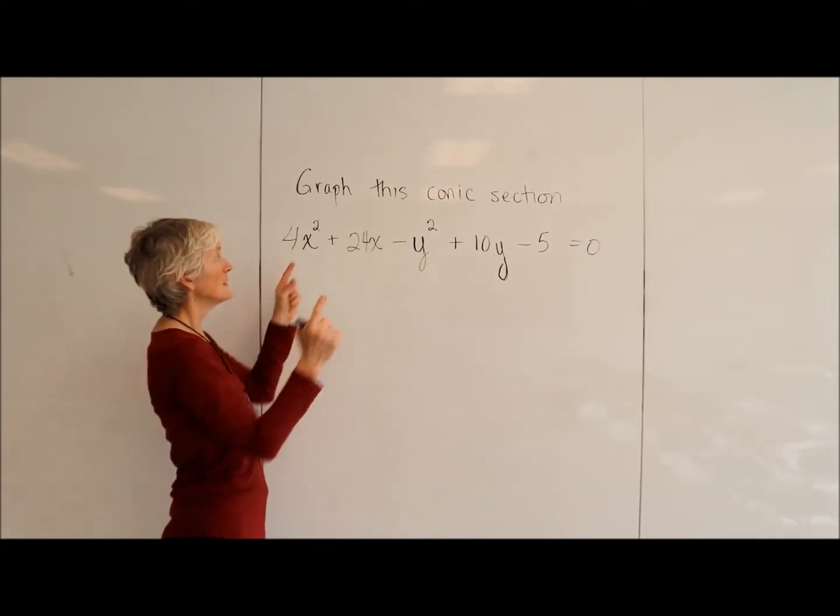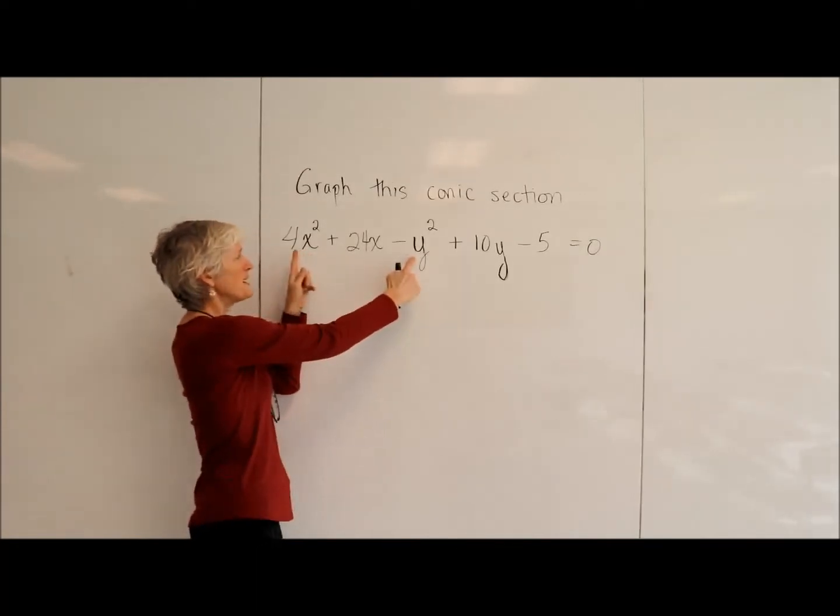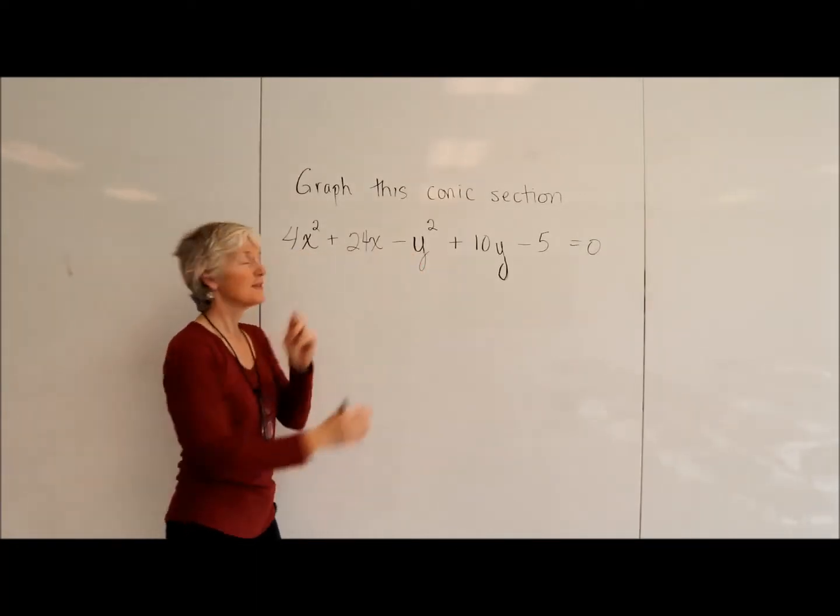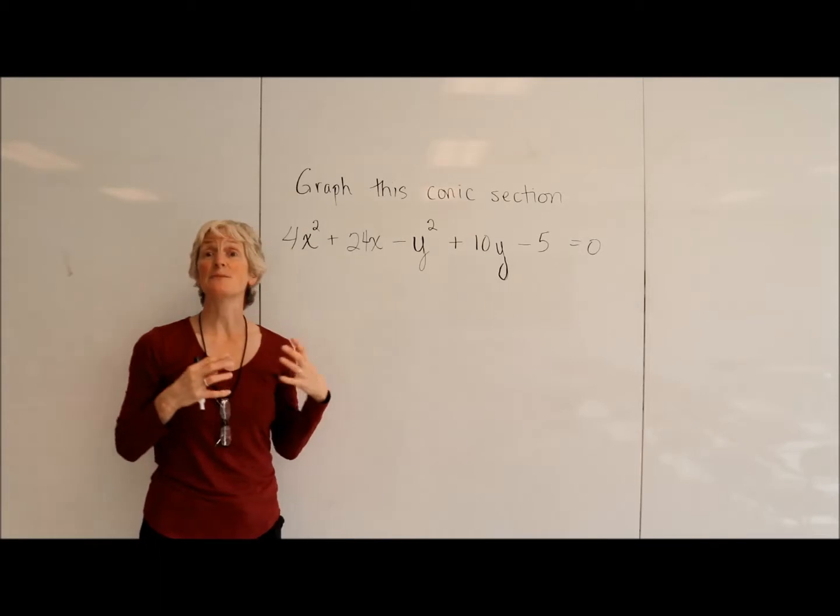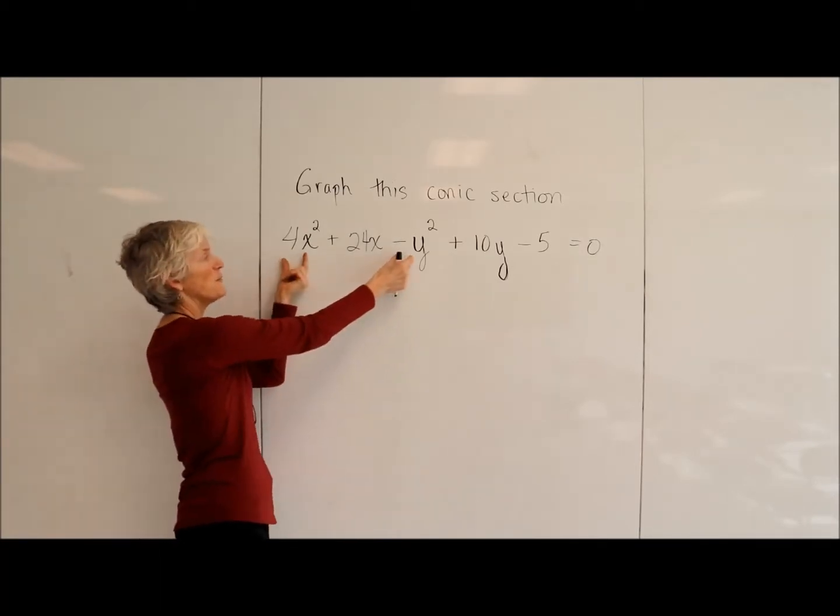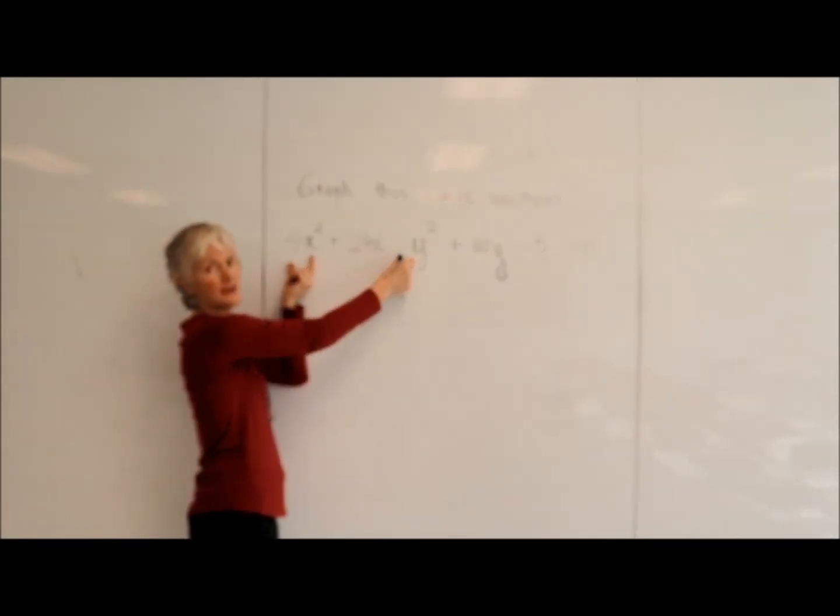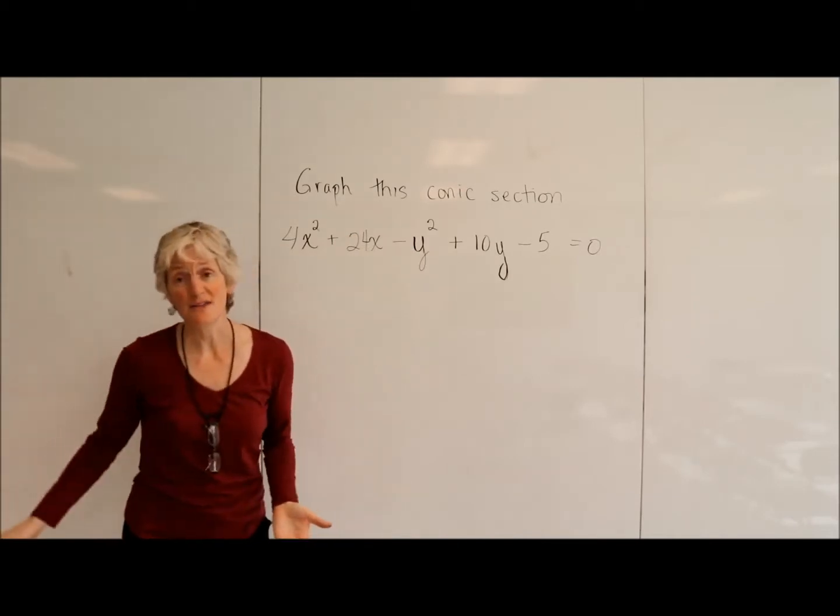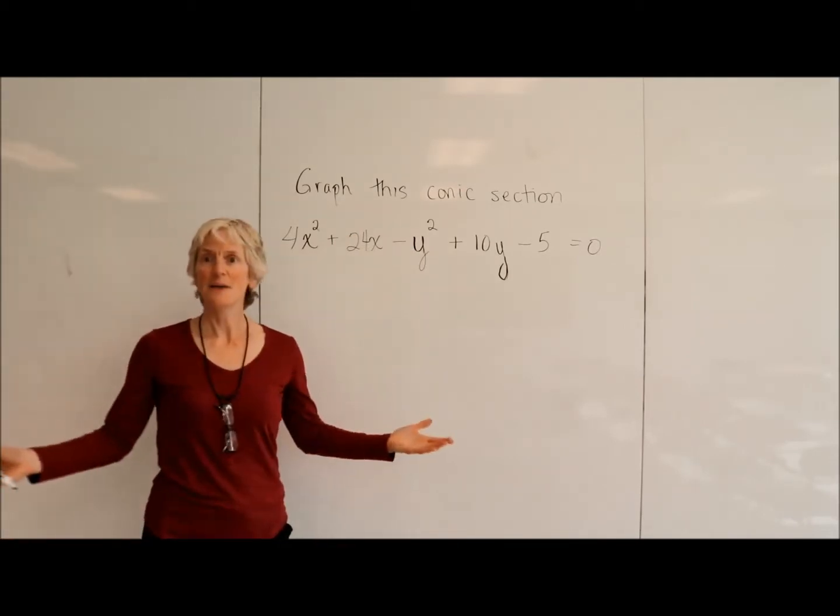Could it be an ellipse? No, because with an ellipse, if you recall, the square terms have to have the same sign. They have to either both be positive or both be negative. So it can't be a circle either. It's got to be a hyperbola.